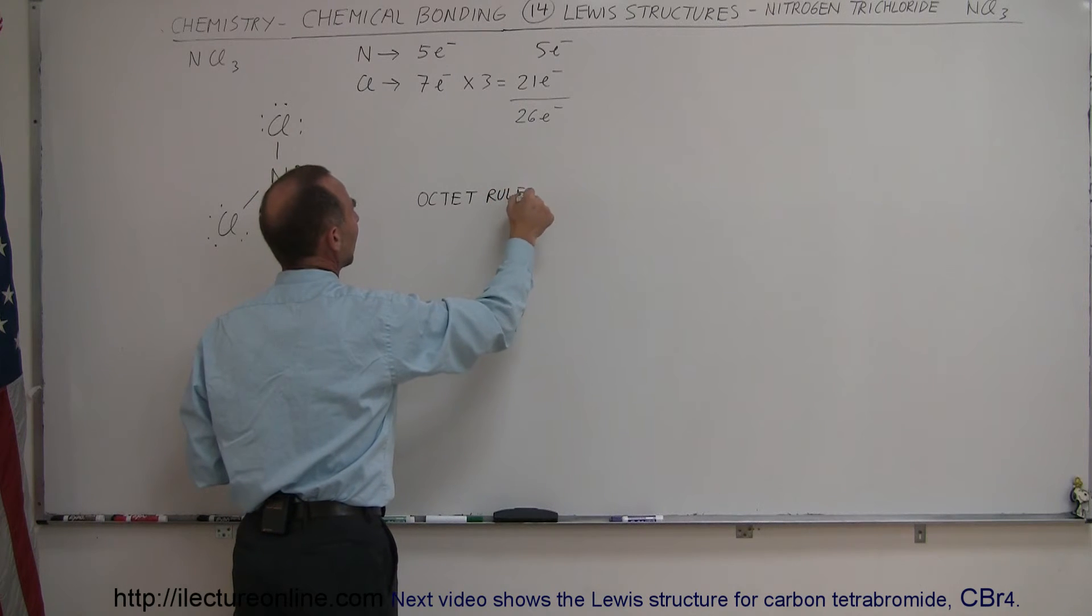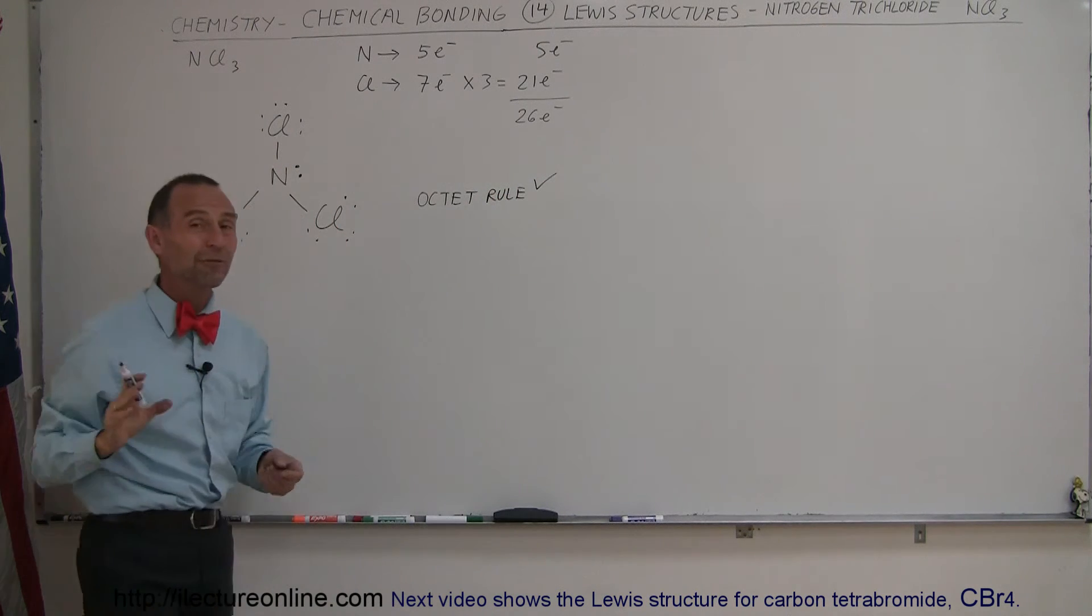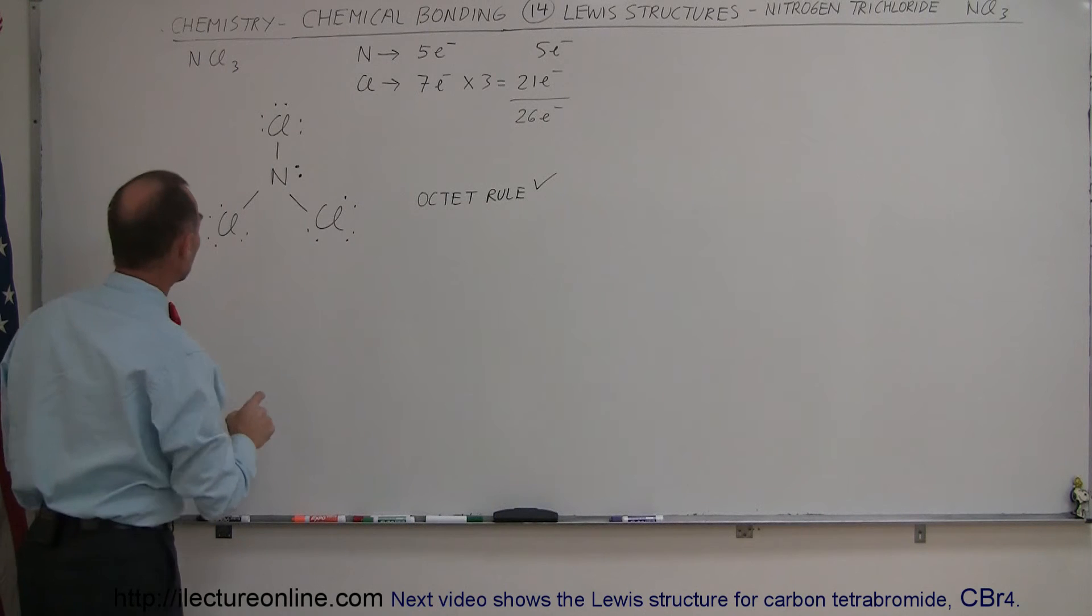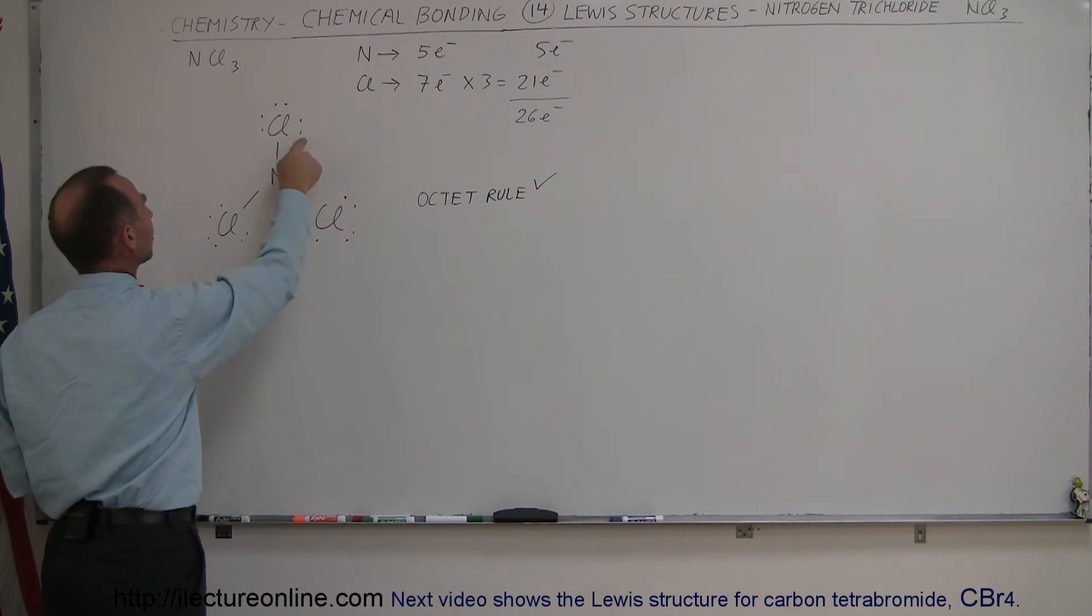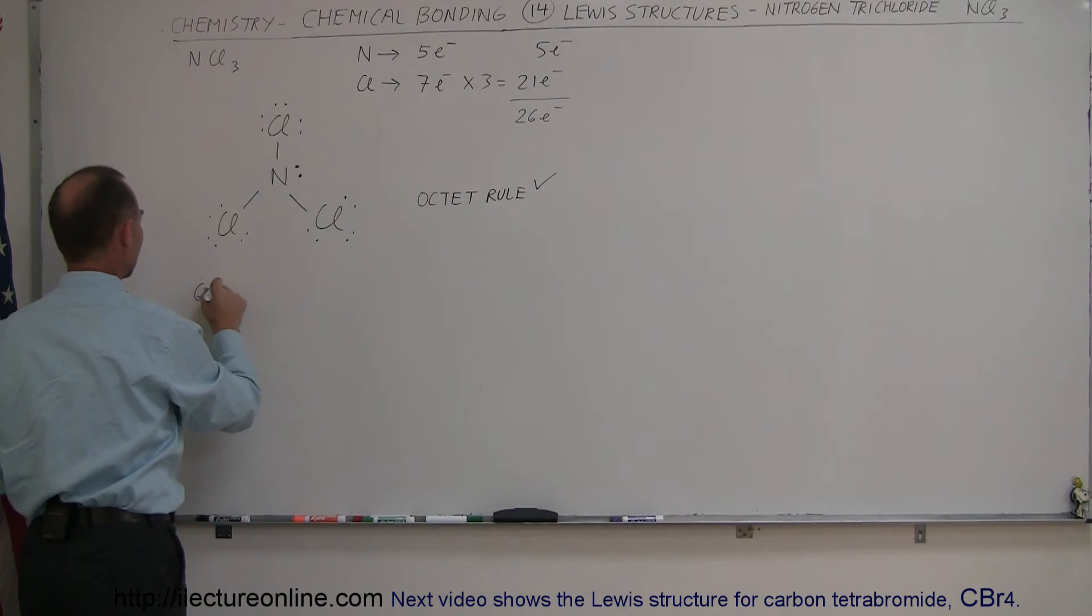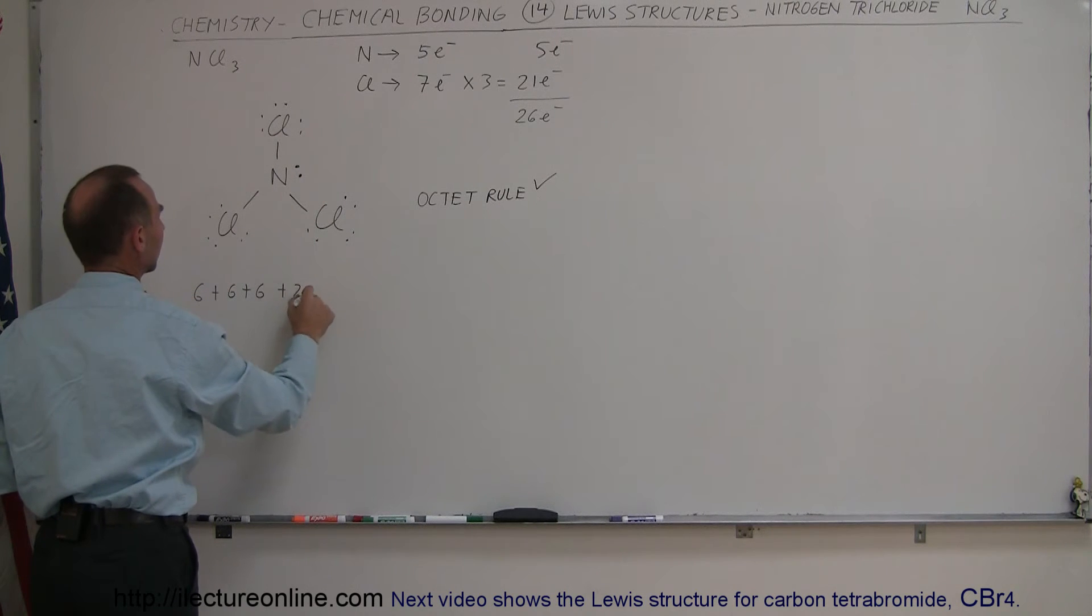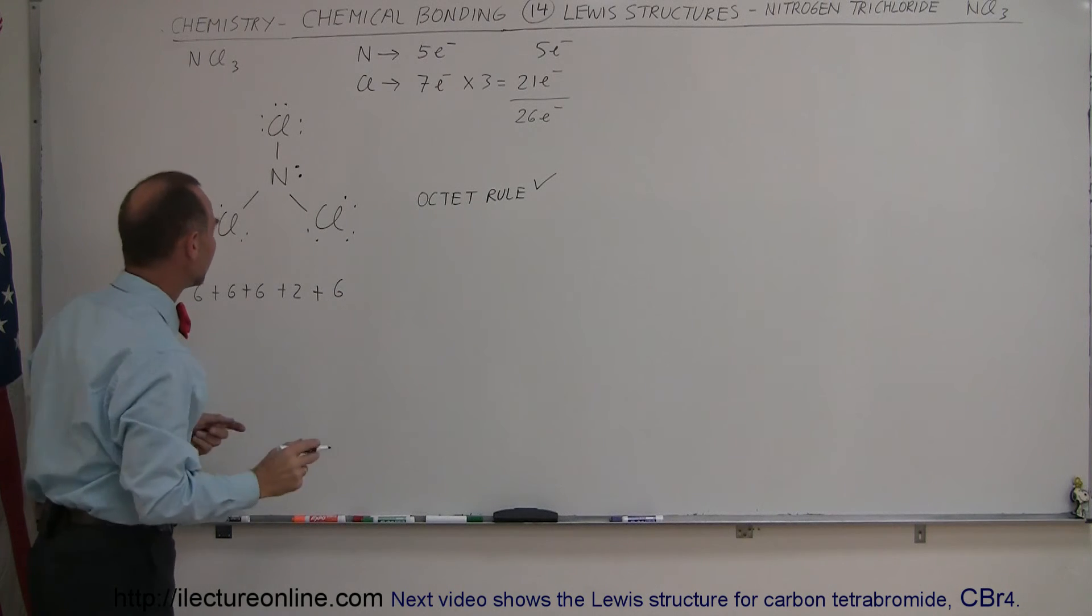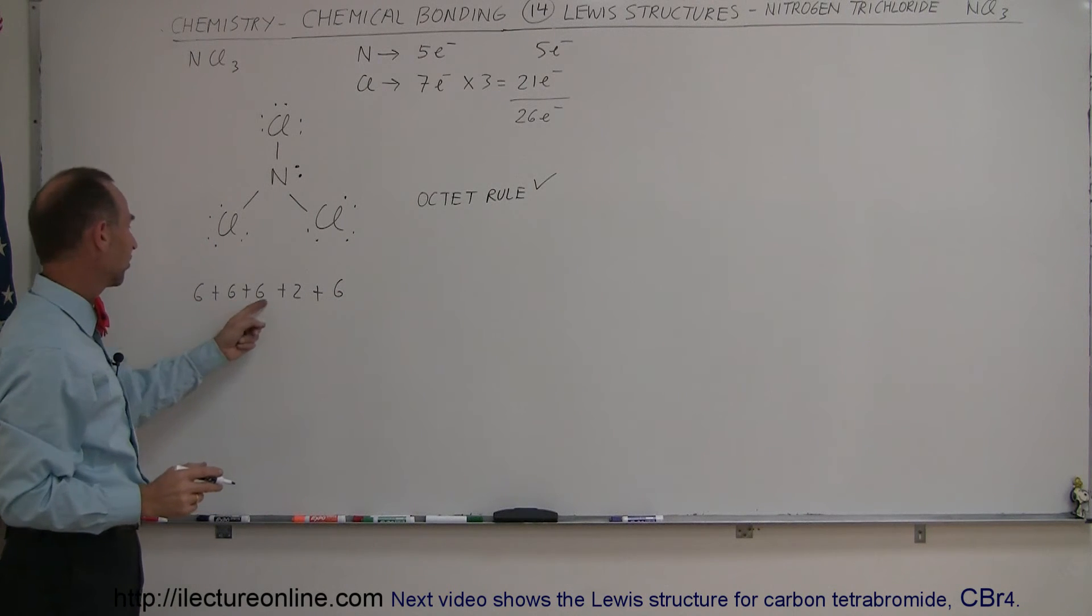Now we also want to make sure that we have the correct number of valence electrons in use. Notice for each of the chlorine atoms, there are six electrons, six plus six plus six, and two free electrons for nitrogen right there, plus two, four, six electrons held up in bonds. So that's six plus six plus six plus six,